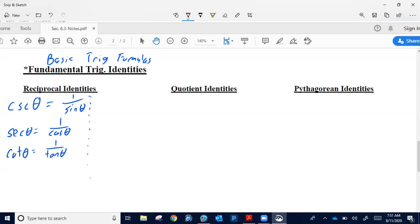It also works the other way around too, in that the sine is the reciprocal of cosecant. The cosine is the reciprocal of secant, and the tangent is the reciprocal of cotangent. Those are reciprocals.